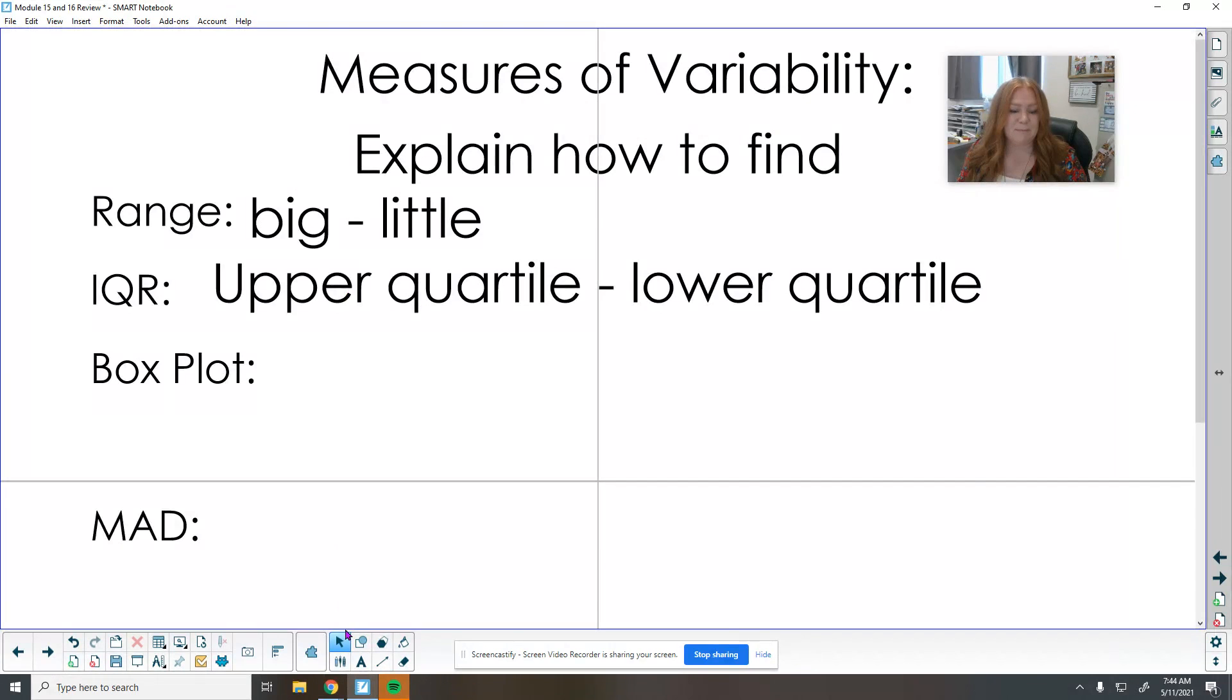When we make a box plot, we first put the numbers in order and then we find the median. So this is the median. Then I mark Q1. So then I mark Q3.